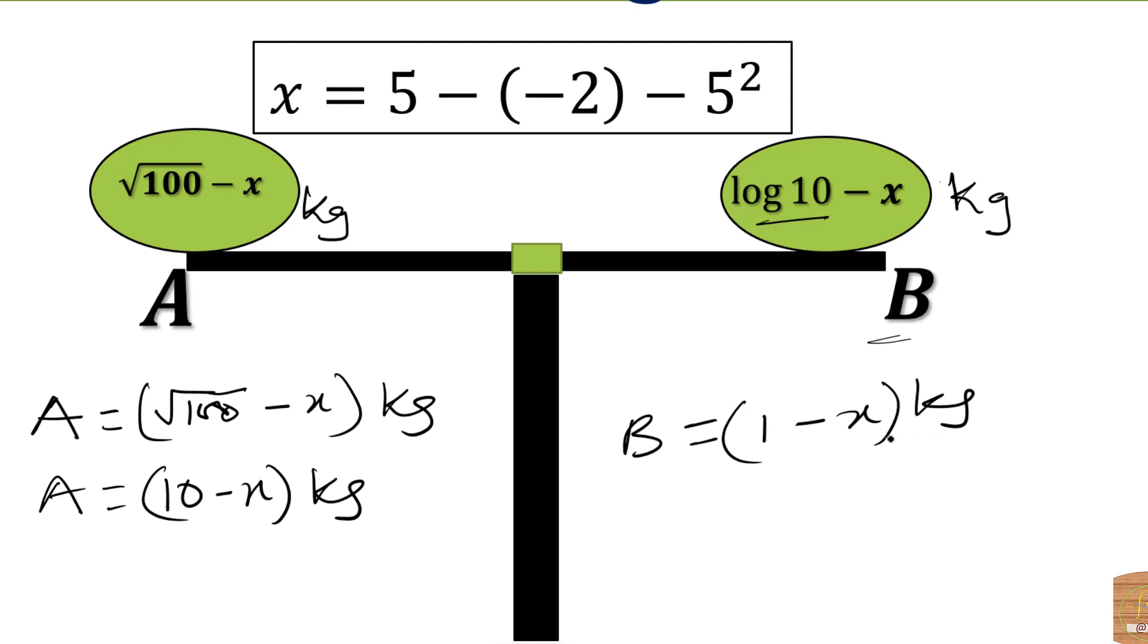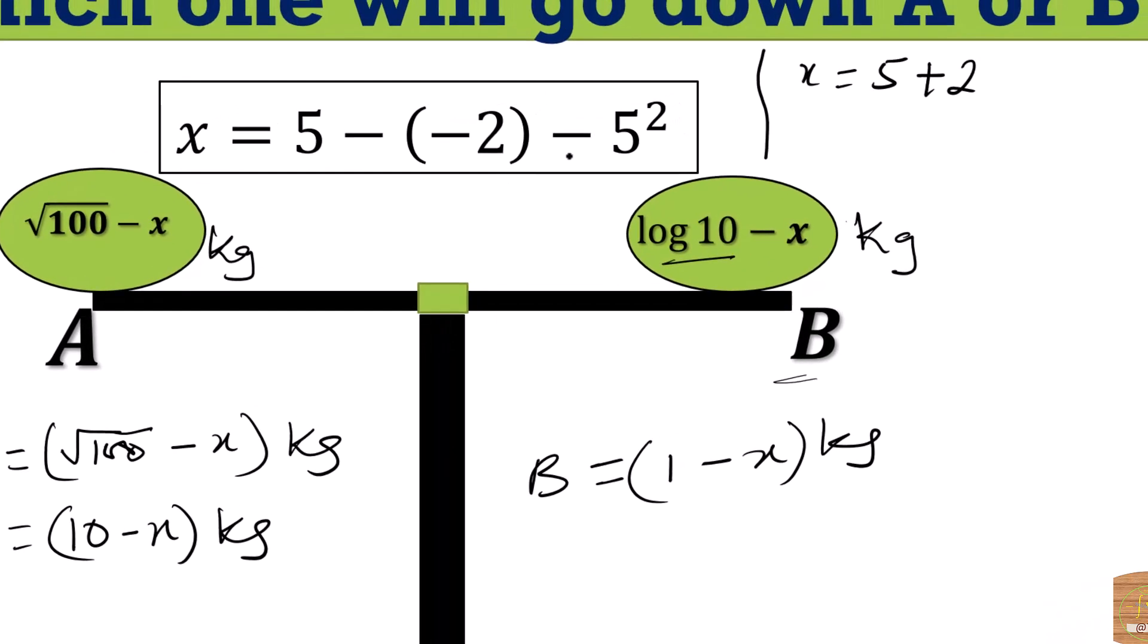Alright, so the last thing is to solve for X. We have an expression for X: 5 minus minus 2 minus 5 squared. So 5 minus minus becomes plus. We have X equal to 5 plus 2 minus 5 squared. Minus 5 squared remains minus 25. So we have 7 minus 25, so X becomes minus 18.